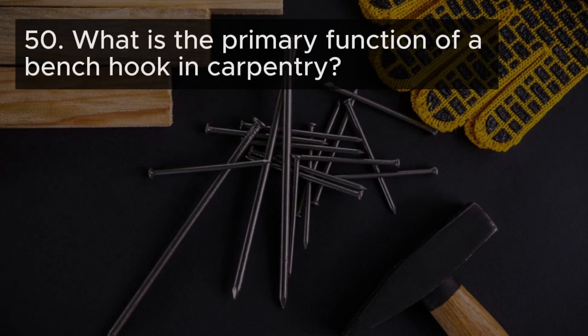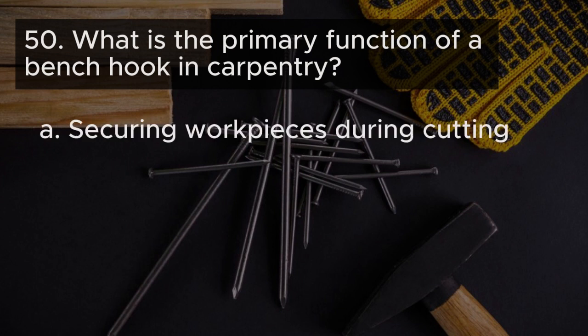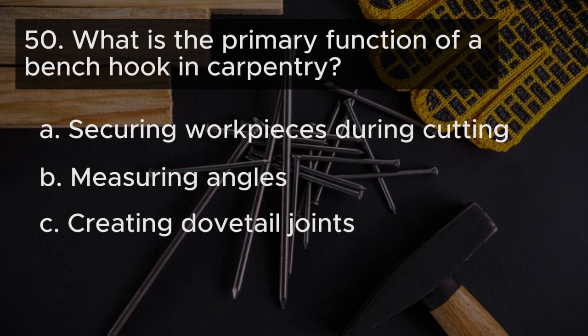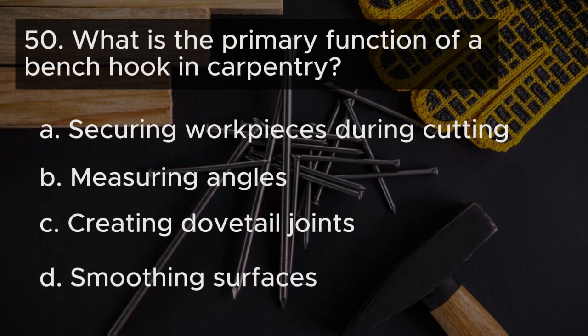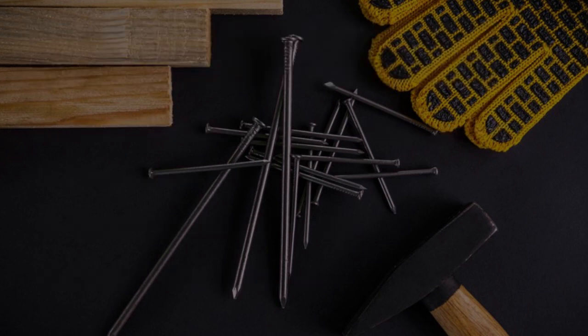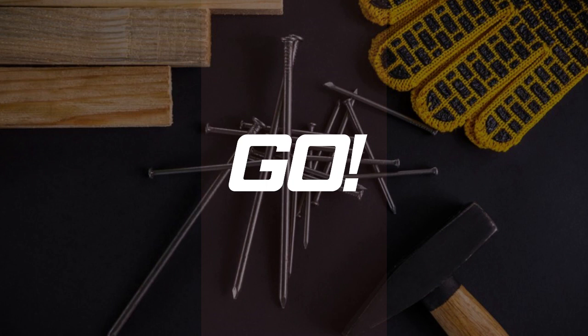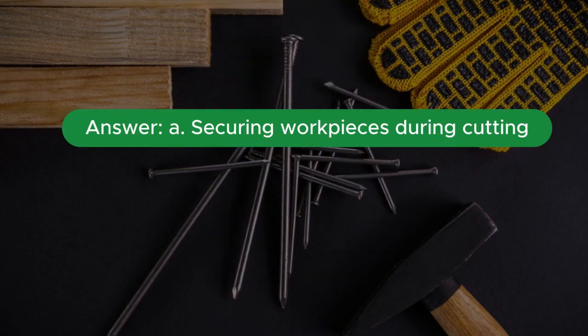Question 50: What is the primary function of a bench hook in carpentry? A. Securing workpieces during cutting B. Measuring angles C. Creating dovetail joints D. Smoothing surfaces. Answer A. Securing workpieces during cutting.